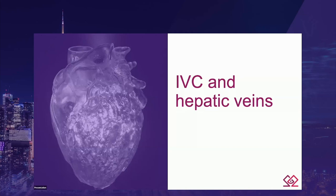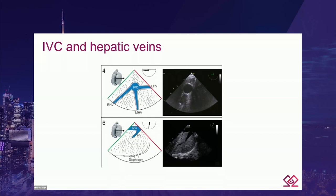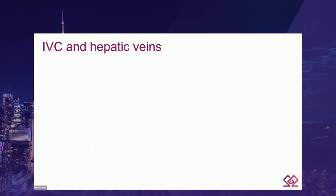As Dr. Danou well explained in his presentation, IVC and hepatic vein views can be obtained from a transgastric view by rotating the probe to the patient's right. Around 0 degrees, the IVC can be seen in short axis along with the three hepatic veins. Around 90 degrees, a long axis of the IVC can be obtained with one of the hepatic veins.